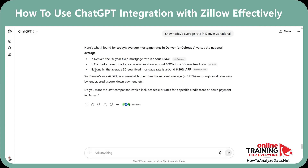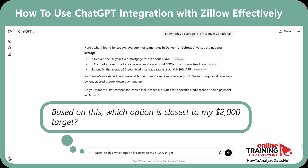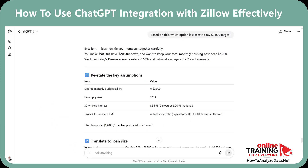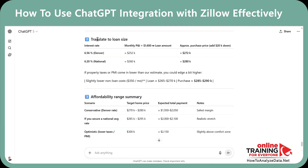You get a comparison between Denver, Colorado and the national average rate. Based on this, prompt: Which option is closest to my $2,000 target? In seconds, ChatGPT summarized your scenario, restated key assumptions, translated the information into loan size, and provided an affordability range summary.